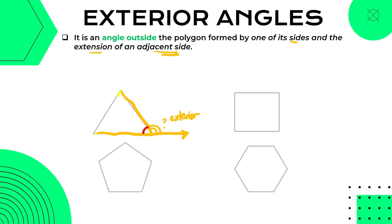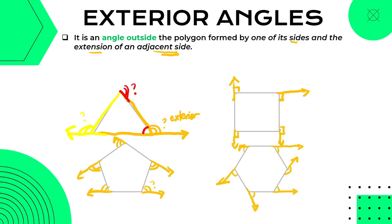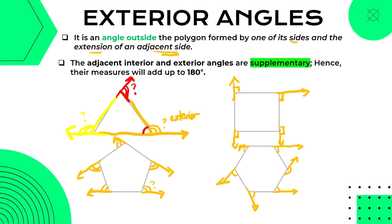Ang interior ay nasa loob, ang exterior yung nasa labas. We can have exterior angles in different positions like this. The adjacent interior and exterior angles are supplementary — hence their measures will add up to 180 degrees. They form a linear pair, so pag in-add natin itong dalawa it will equal 180 degrees. If we have an interior angle of 60 degrees, the exterior angle will be 180 minus 60, which is 120 degrees.